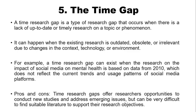The fifth type is the time gap. A time gap is a type of research gap that occurs when there is a lack of up-to-date or timely research on a topic or phenomenon. After five years it is expected that a work has gone obsolete — some even say ten years. In universities, you are expected to review your curriculum every five years. That is a time research gap. It happens when the existing literature is outdated, obsolete, or irrelevant due to changes in context, technology, or environment.